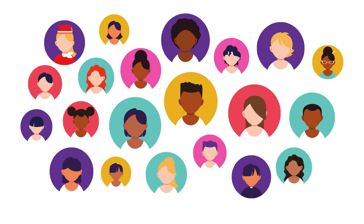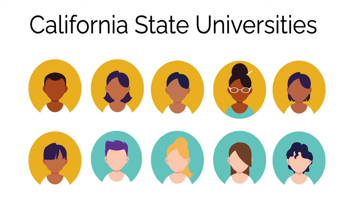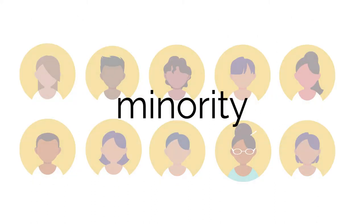As an educator in California, you serve a very diverse group of students. In terms of race and ethnicity alone, in the California Community College system, 7 out of 10 students is a person of color. And in the CSU system, 6 out of 10 students are people of color. Which really questions the term 'minority,' doesn't it?